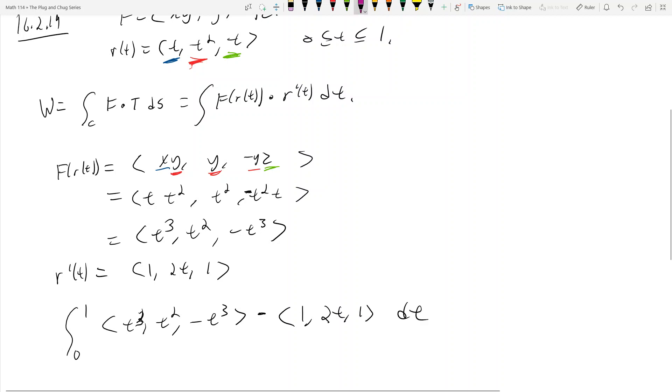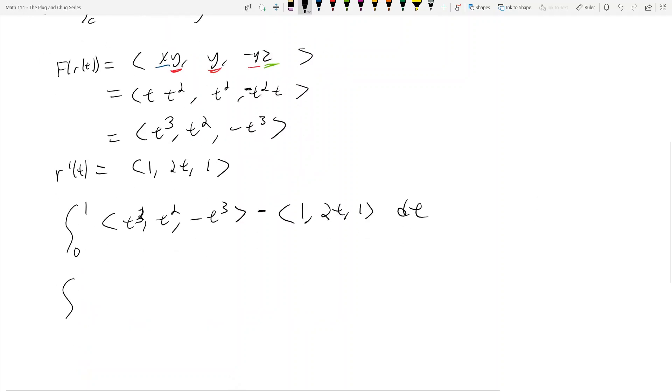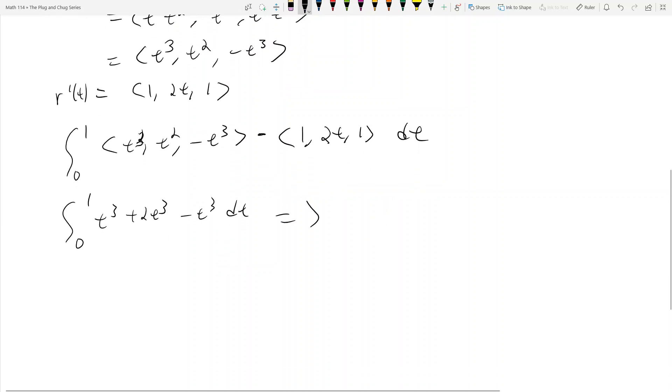And again, these guys come from here. So now what? Now if you do the dot product, you get t cubed plus 2t cubed minus t cubed dt from 0 to 1. And so this becomes then the integral from 0 to 1 of just 2t cubed, which is t to the 4th over 2 from 0 to 1. And so the work done is 1 half. And yeah, that's pretty much it.